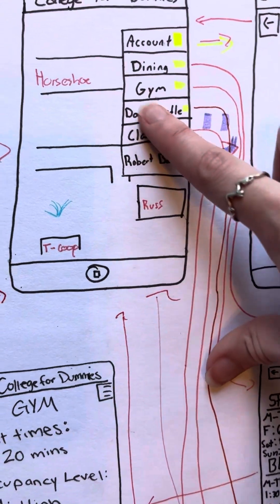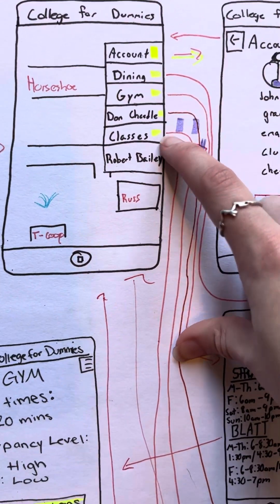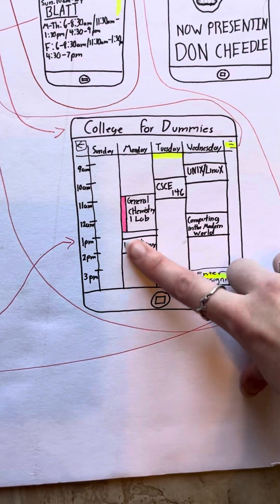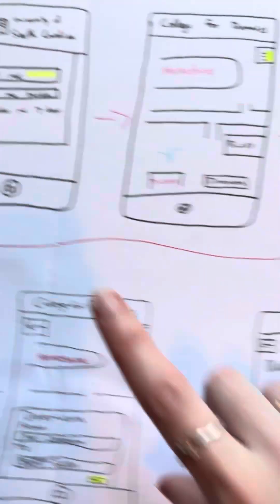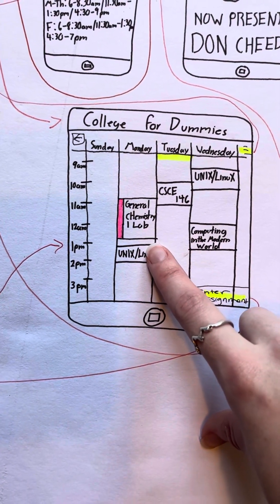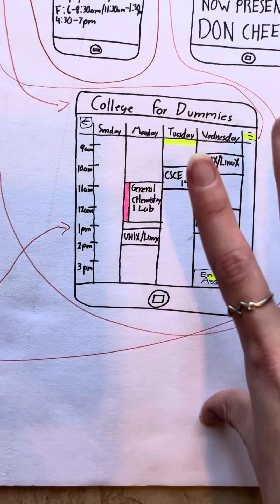So we're going to skip over this one for now and go to our classes. For our classes, we go down here, and it immediately pulls up your schedule that is linked to your account. You have your classes here, so it makes it easy for you to see what classes you have and when, especially when you're starting off as a freshman. It can be overwhelming.